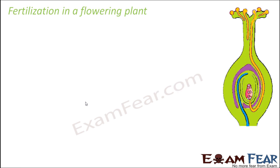Fertilization in a flowering plant. The structure you see here is the female reproductive part, that is the pistil. The pollen grains have reached here, they have formed the pollen tube, and the pollen tube takes them inside the ovule, that is the embryo sac, inside which you have all the eight nuclei. So now we have to see what exactly happens during fertilization.